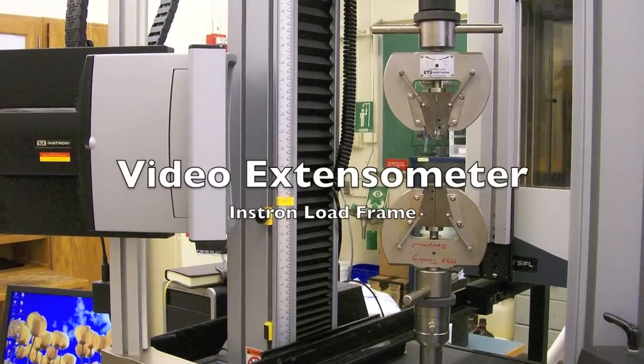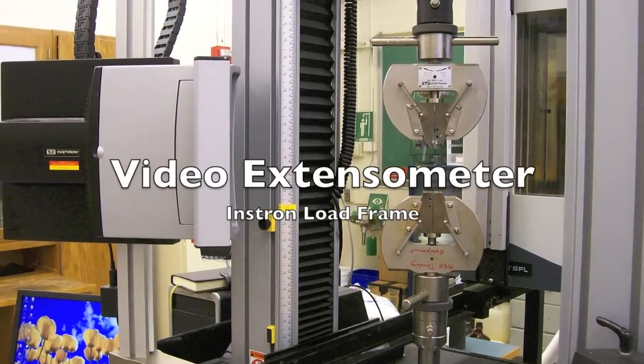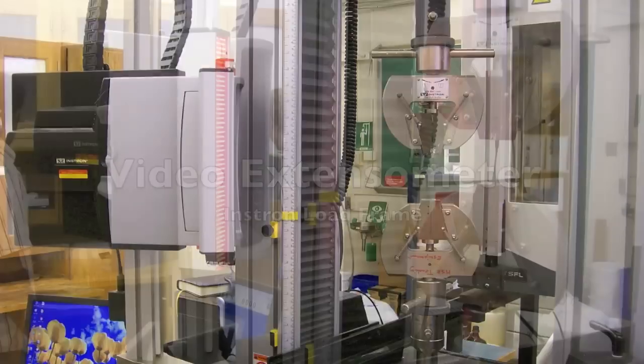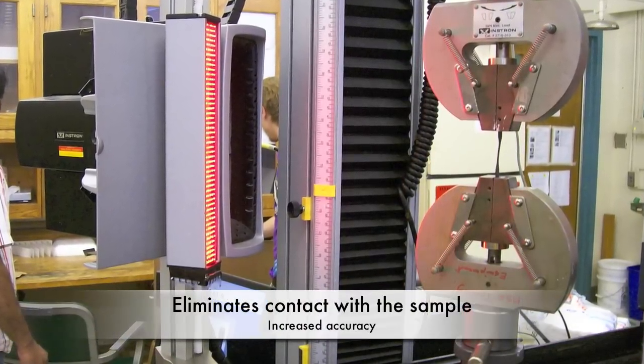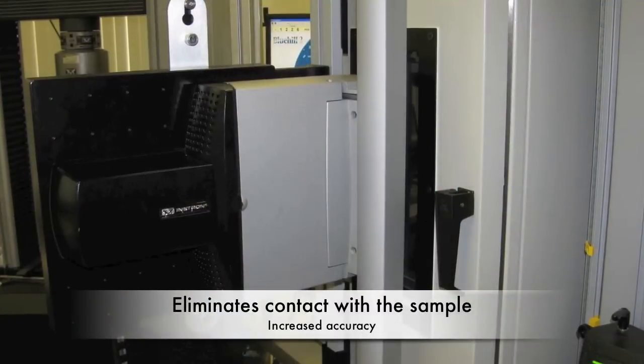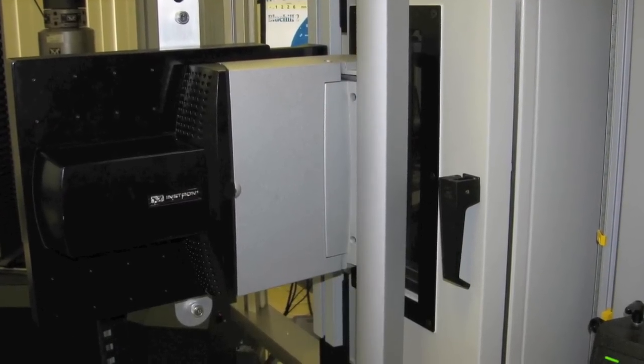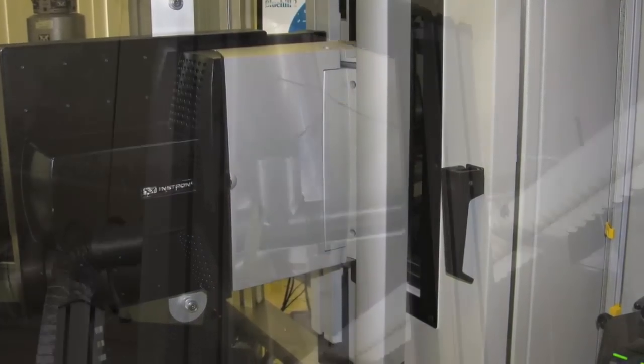The video extensometer is used with the INSTRON load frame to measure strain during a tensile test. This method eliminates all contact with the sample by precisely measuring the strain with high-resolution video. The advantages of this method include no influence on the specimen and increased accuracy by eliminating errors caused by moving parts.